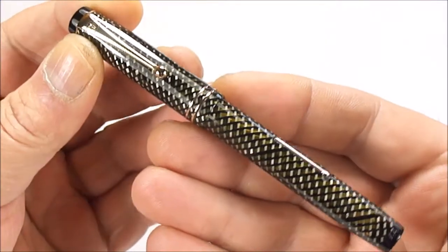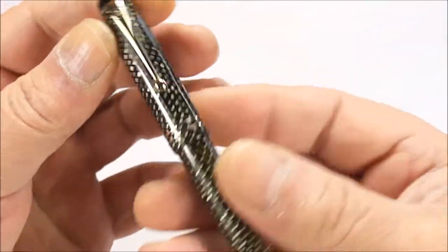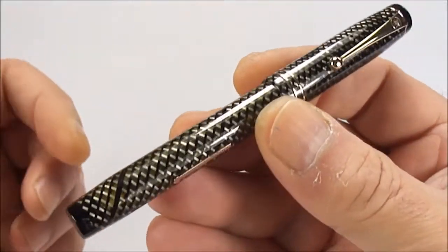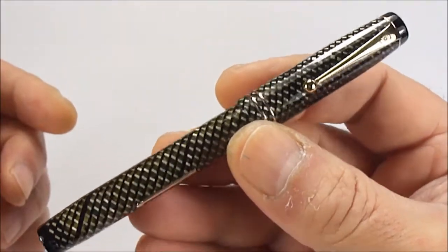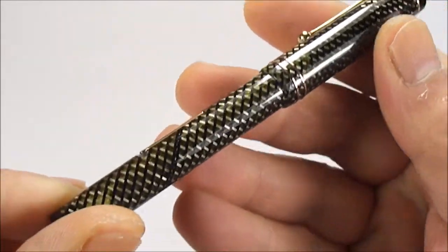It's made of this sort of green color with black. Some people call it a mesh, some people call it the webbing. There's different terminologies. I'm just simply going to call it the mesh pattern.